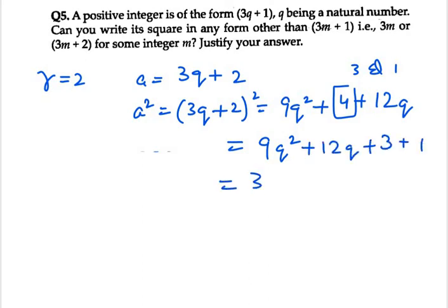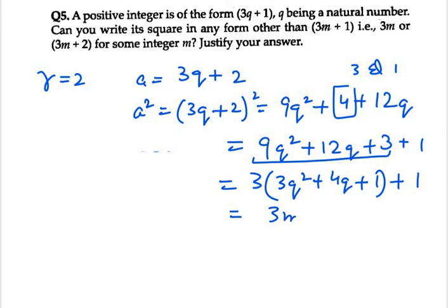Now in this case, what we can take common from the first 3 terms is 3. So we are left with 3 times 3q square plus 4q plus 1 plus 1. Now whatever is in the bracket can be written as m. So it is in the form of 3m plus 1.